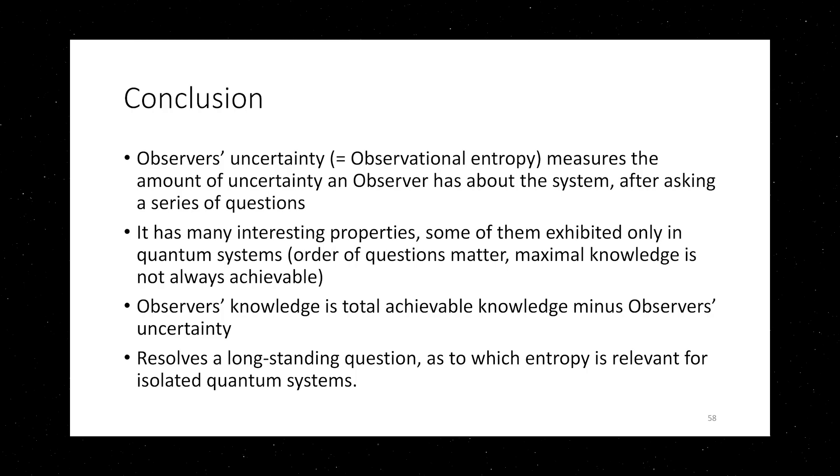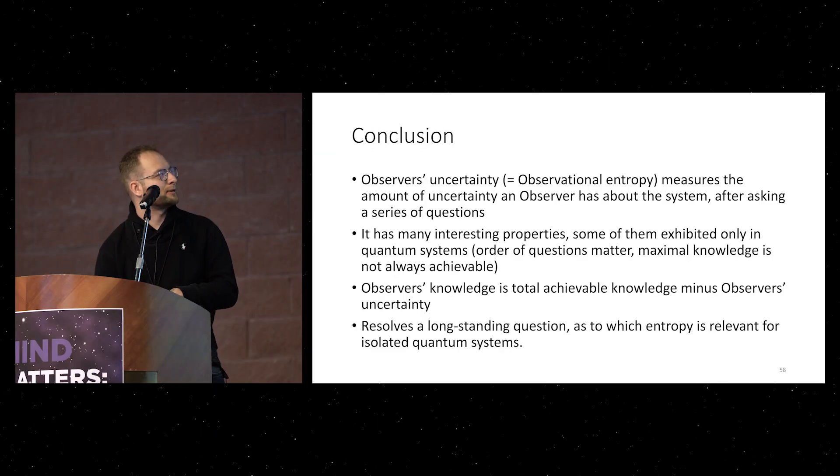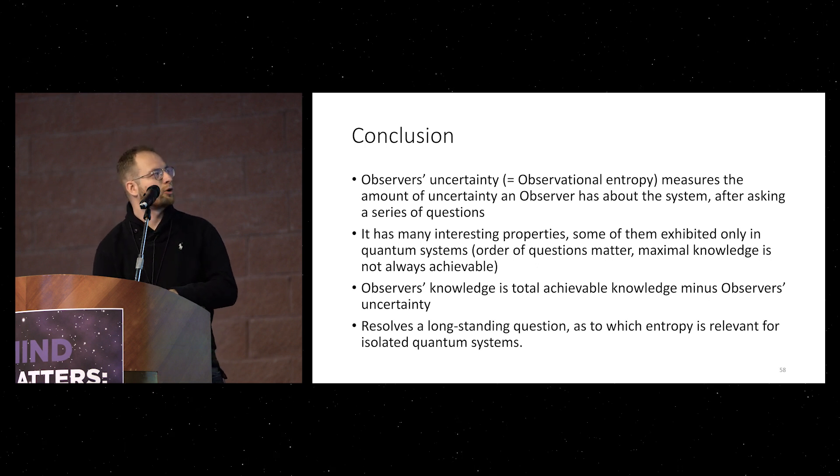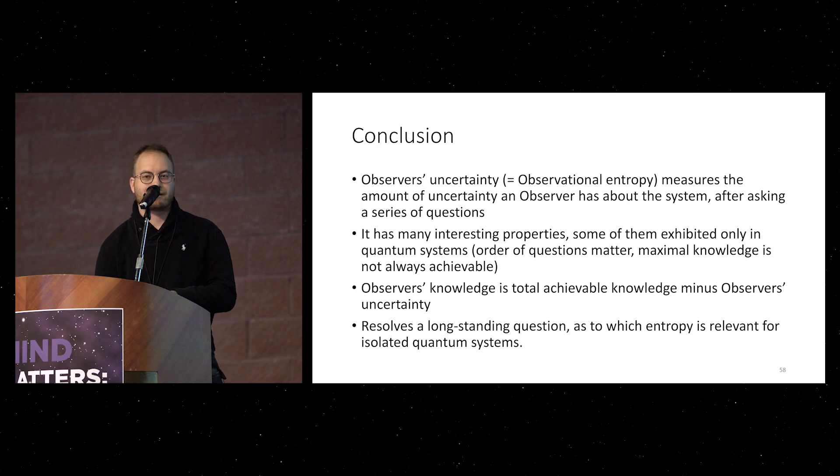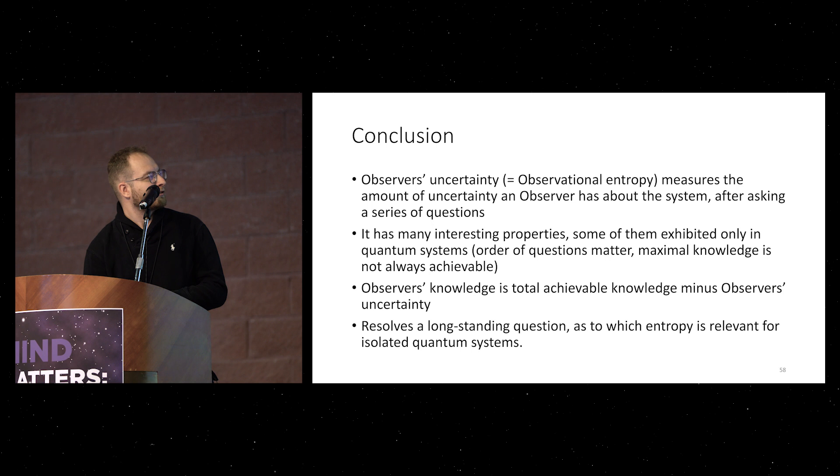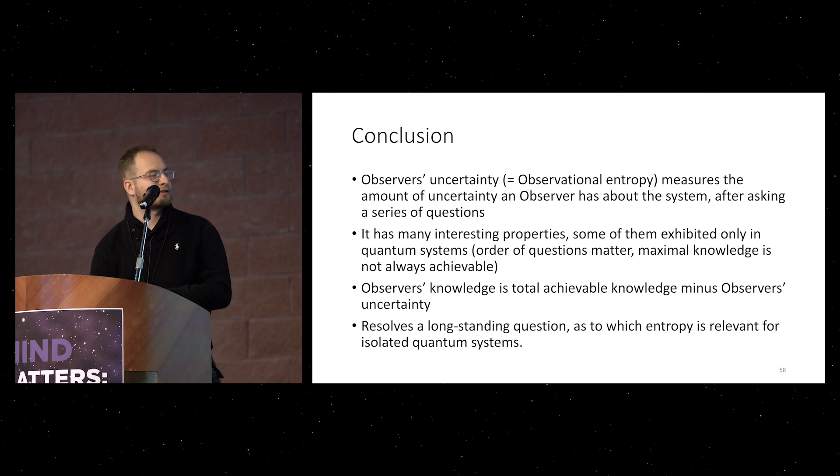So now I'm getting to the conclusions. Observer's uncertainty, which we call observational entropy measures the amount of uncertainty an observer has about the system after he asks a series of questions. It has many interesting properties. Some of them exhibit only quantum systems and such as order of question matters, maximal knowledge is not always achievable and a few others I didn't talk about. Observer's knowledge is total achievable knowledge minus the observer's uncertainty. And this pretty nice story in my opinion is good for resolving a long-standing question as to which entropy is relevant for isolated quantum systems. Thank you.